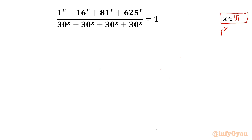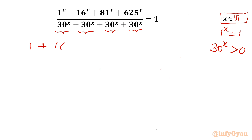Point one: 1 to the power x will always be 1. Point two: 30 to the power x will always be positive — it cannot be 0. It appears 4 times, so I will write 4 times 30 to the power x and then cross multiply. So our equation becomes: 1 plus 16^x plus 81^x plus 625^x equals 4 times 30^x.